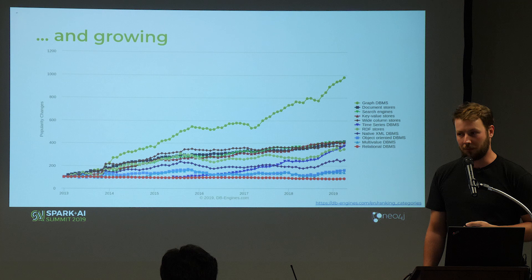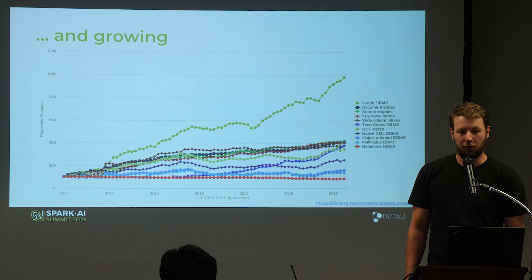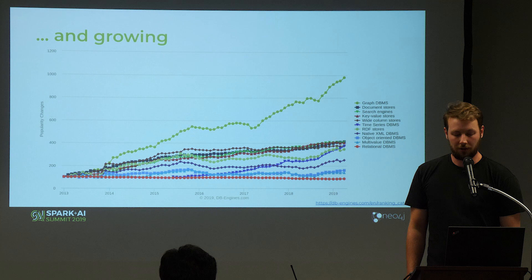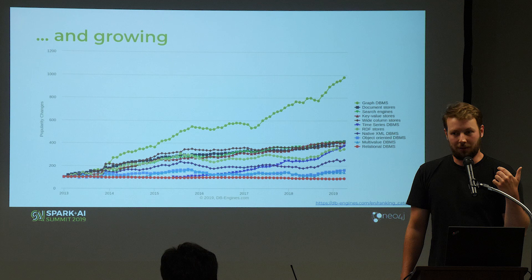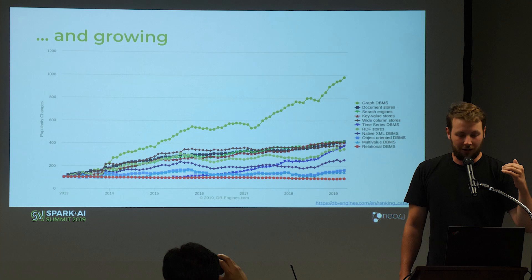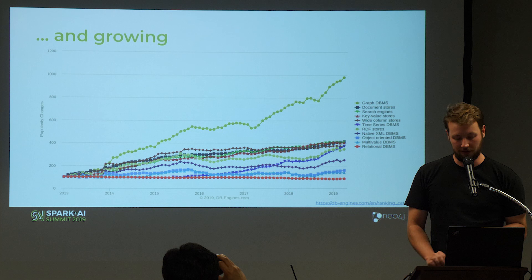The graph space is actually growing. This chart is from dbengines.com. They use Stack Overflow questions and mentions in other public spaces to extract the popularity of a database. This is actually a relative growth in this space. You can see at the bottom the red line for relational databases — they are equally popular throughout the years, though this represents relative growth in the field.